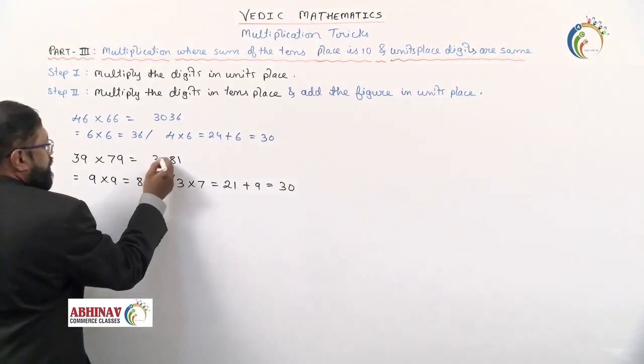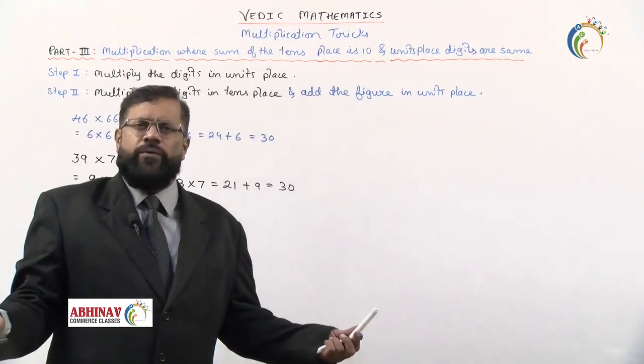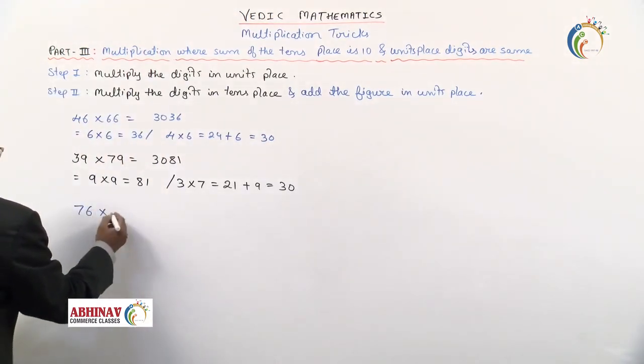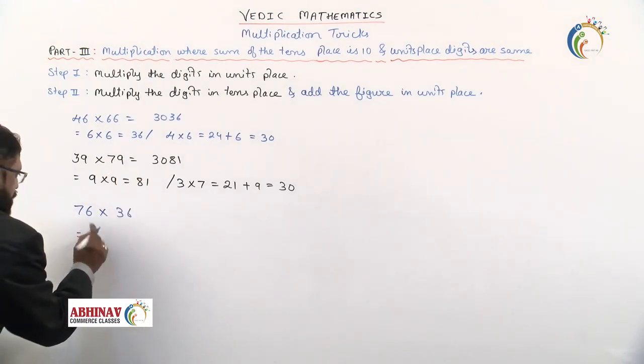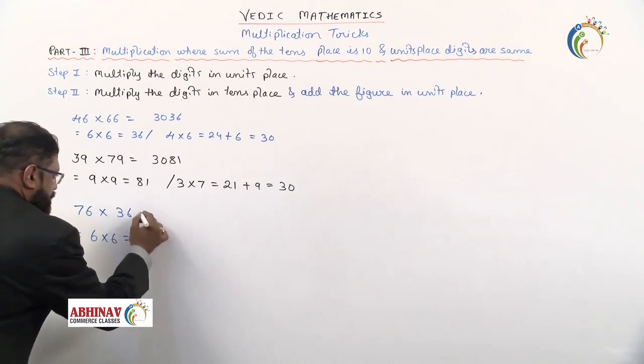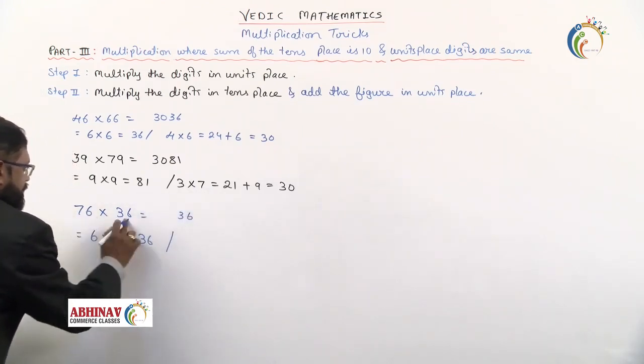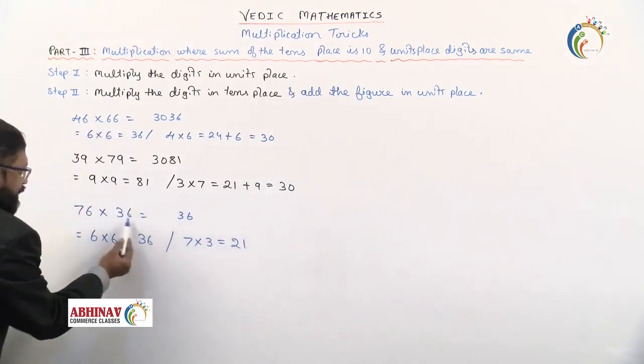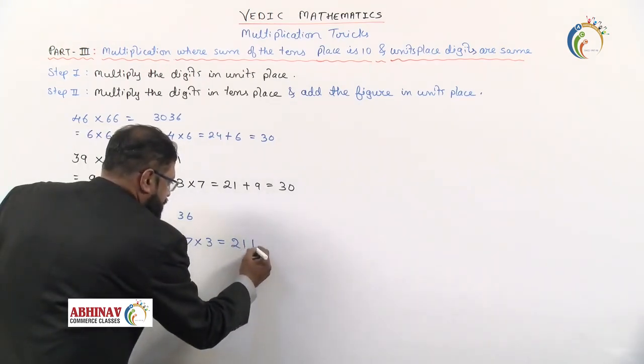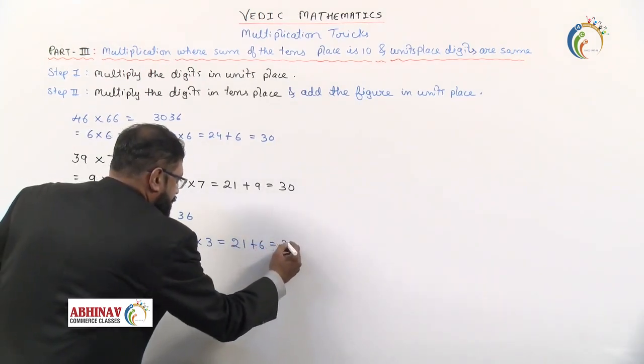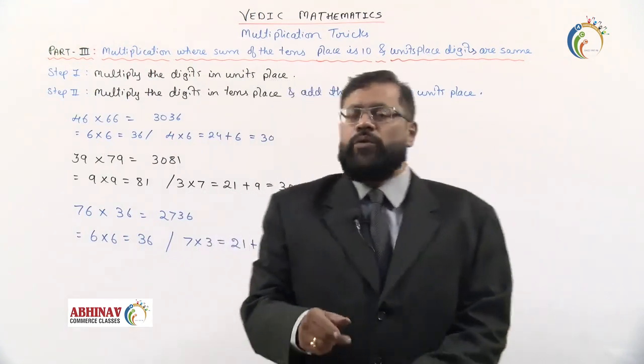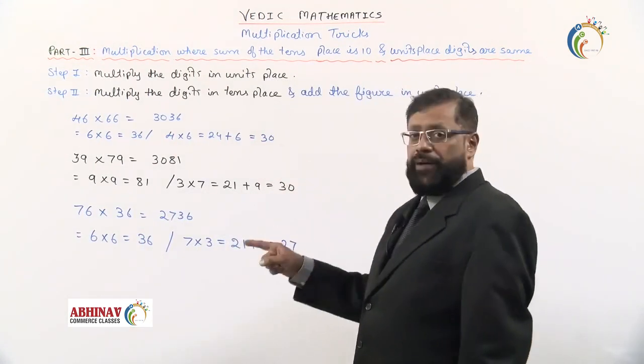Add the units place number. Units place is 9, so 21 plus 9, what we get is 30. Write here 3081 will be the answer. Another example: 76 into 36. Units place: 6 into 6 is 36. To the right hand side we'll write 36. 7 into 3 is 21, and add the units place number, that is 6. So what we get is 21 plus 6, which is 27. Write as 2736. That's all.